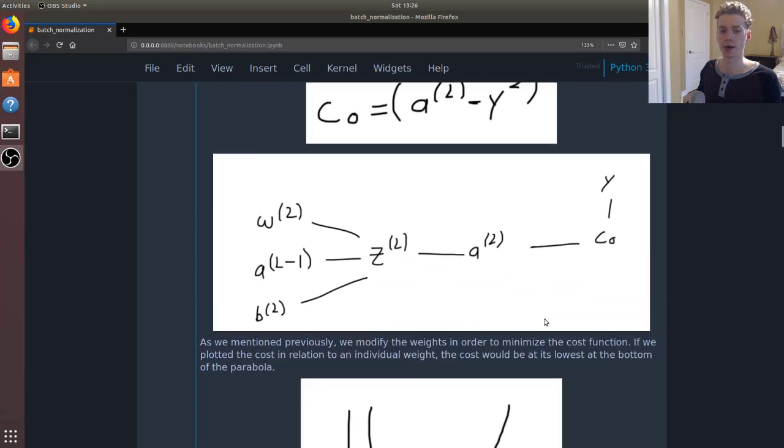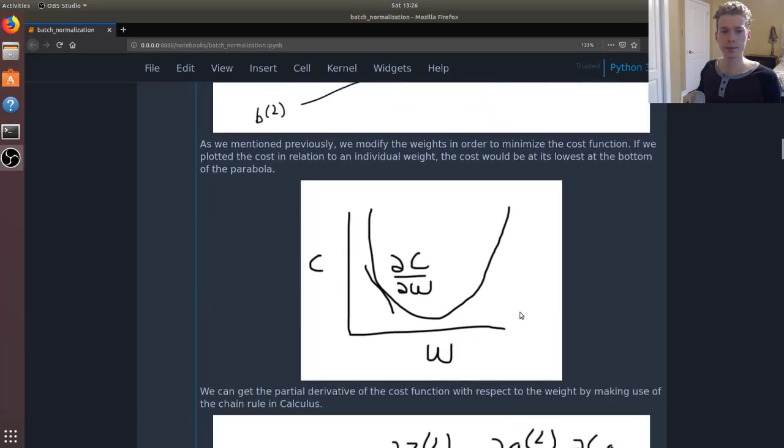If we plotted the cost function in relation to the weight, we would get something like this where there is an optimal weight that minimizes the cost function.